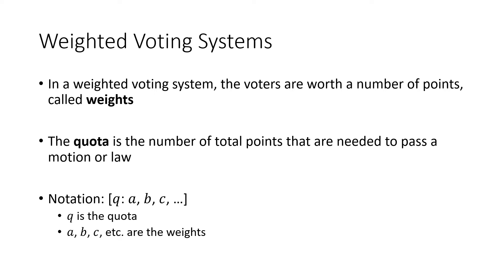The notation is: we have square brackets. The first number we write is the quota — that's the number of points we need for something to pass. After the colon, we have a bunch of numbers separated by commas. Those are the weights of the voters, usually listed in decreasing order.